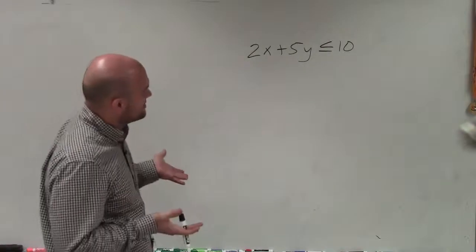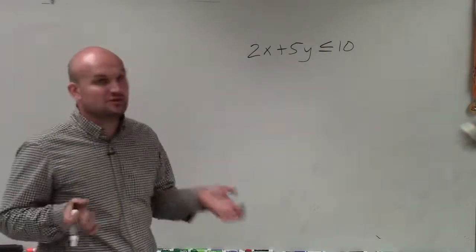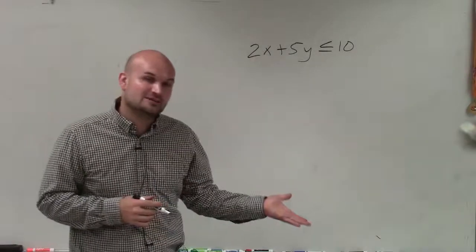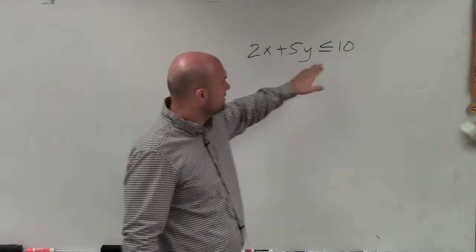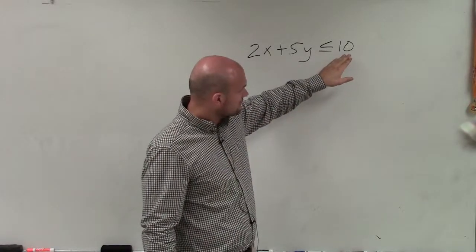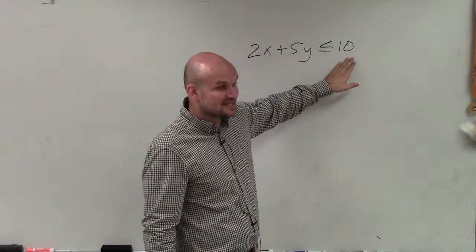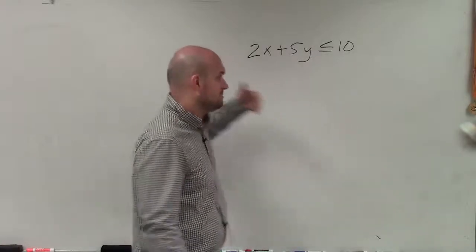Now, since this inequality is written in standard form, there's two ways we could graph this. We could graph this using the intercept method or the slope-intercept method. Since both of my coefficients of my x and y can be divided into my constant 10, I'm going to use the intercept method.